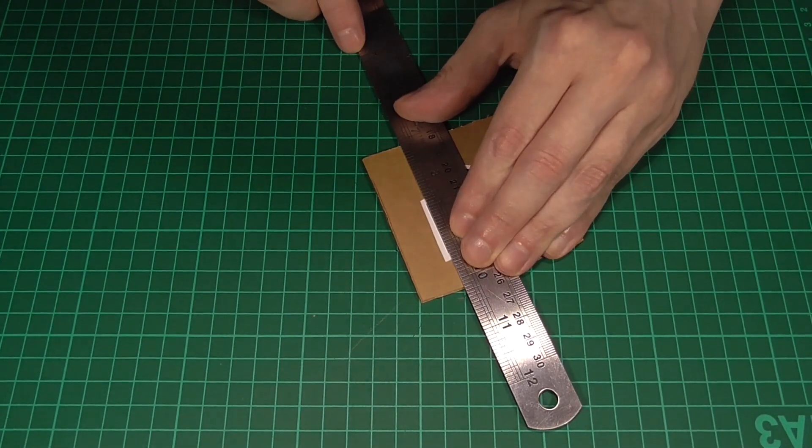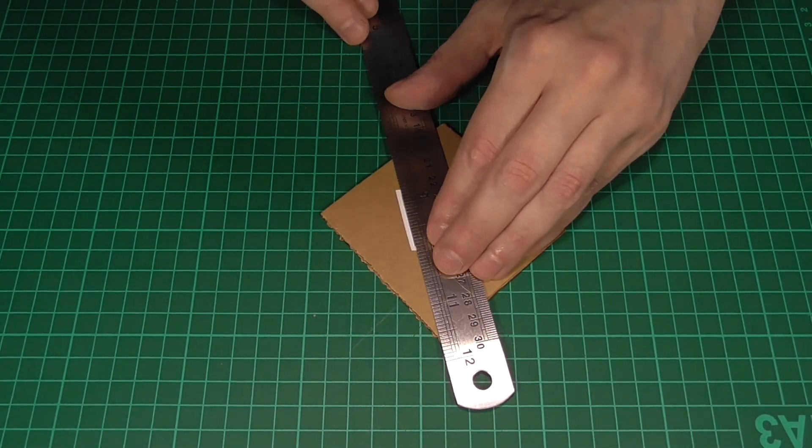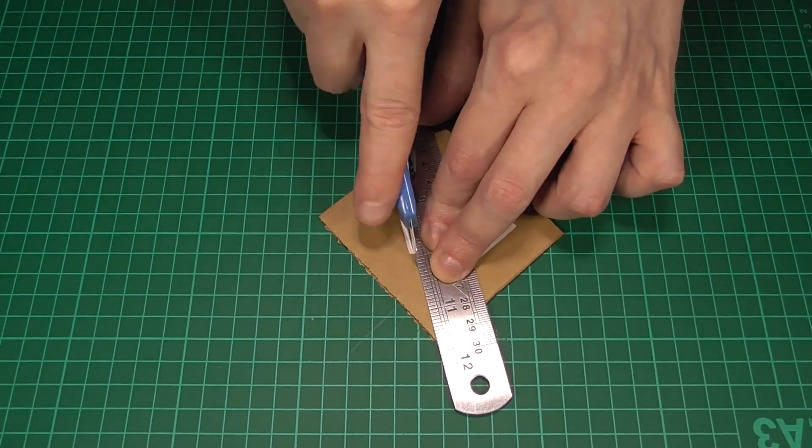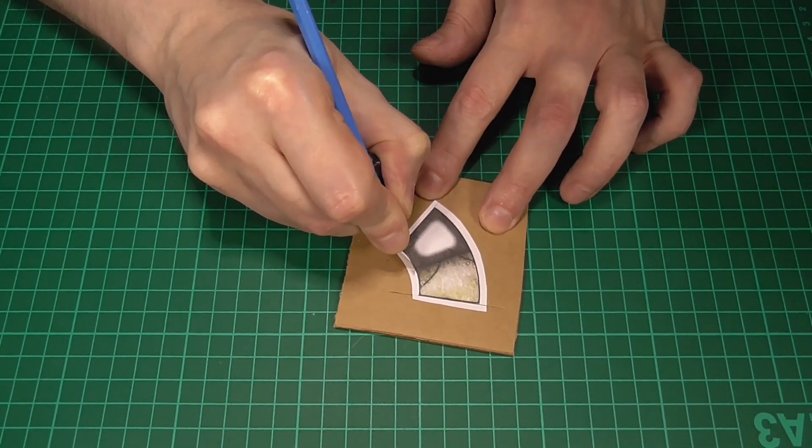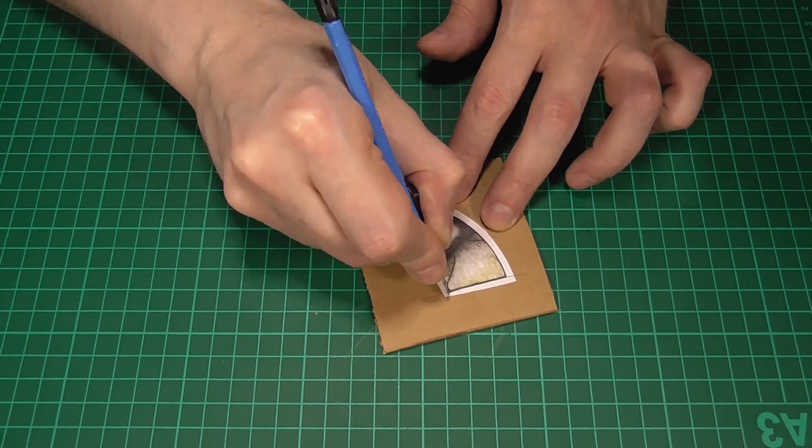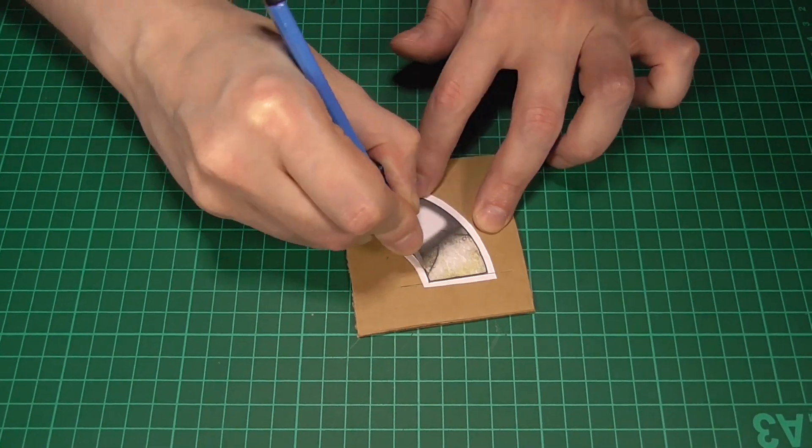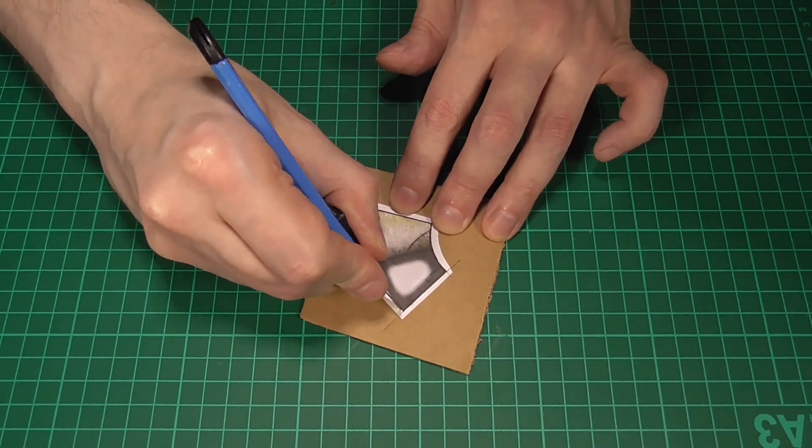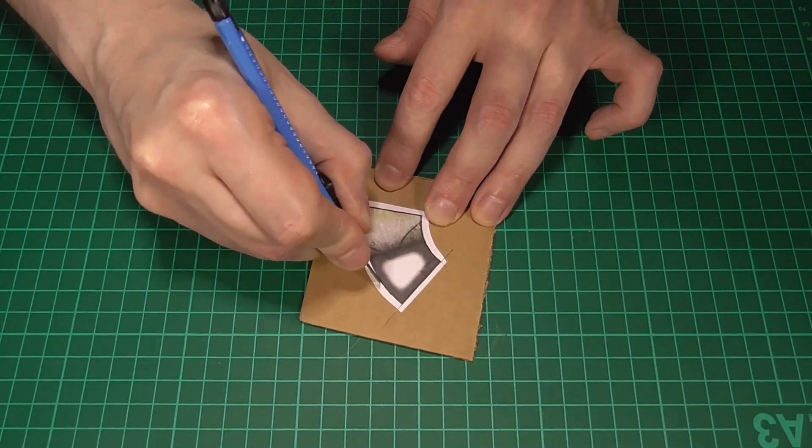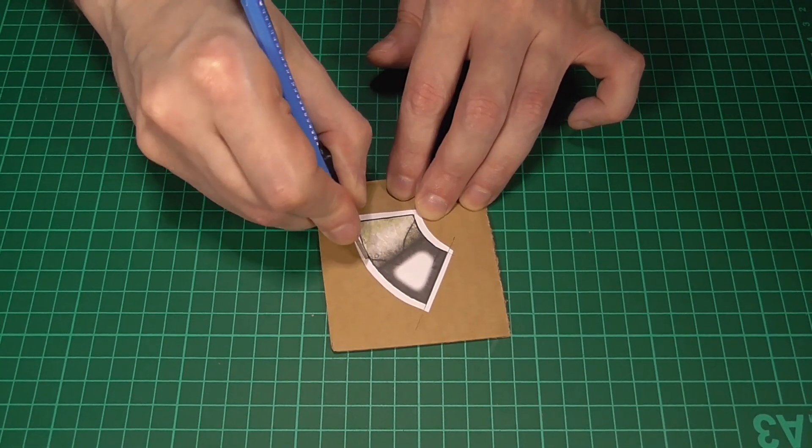And what I like to do is first cut the two straight edges to size, just using a metal ruler and a sharp knife. And then making sure that I've got a brand new blade, I'll start to cut out the two curved sides. And when doing this, you just need to take your time and not try to hack your way through in one go. For example, my first cut isn't really doing much more than cutting through the exterior covering of the corrugated card.